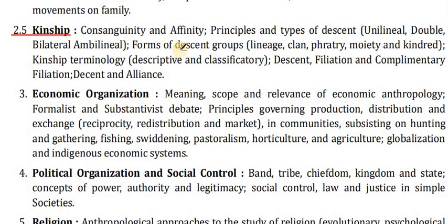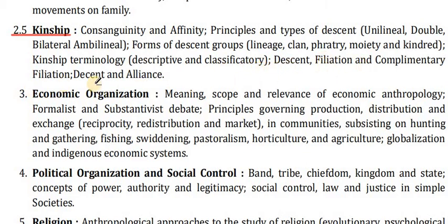Point 2.5 covers kinship: concepts of descent, consanguinity and affinity, principles and types of descent — unilineal, double, bilateral and bilineal. Forms of descent groups: lineage, clan, phratry, moiety and kindred. Kinship terminology — descriptive and classificatory. Descent, filiation and complementary filiation. Descent and alliance.